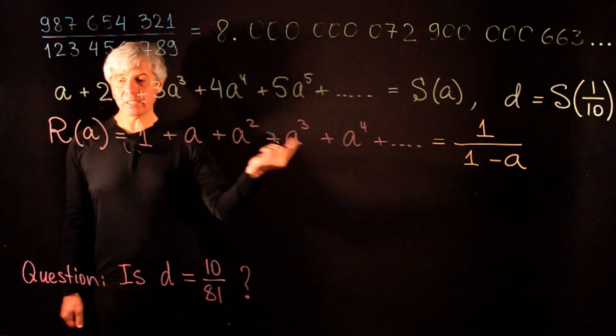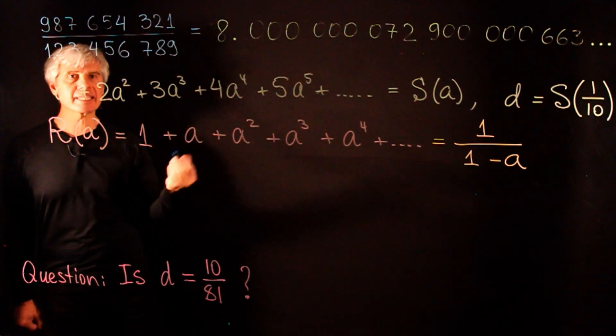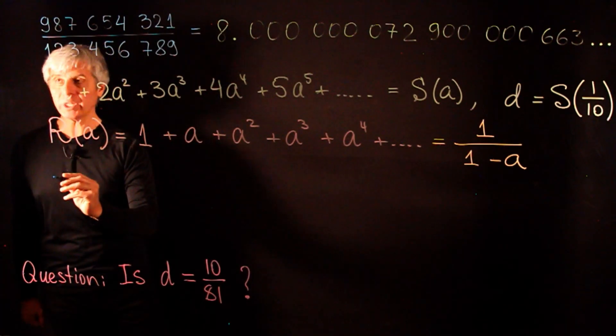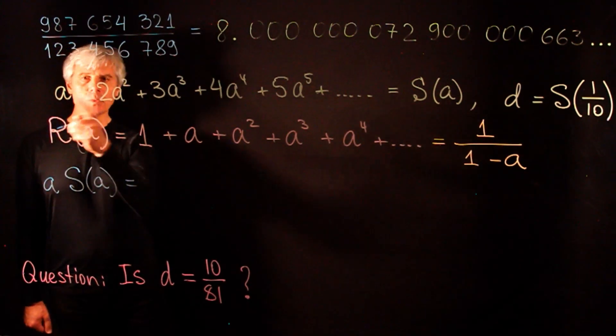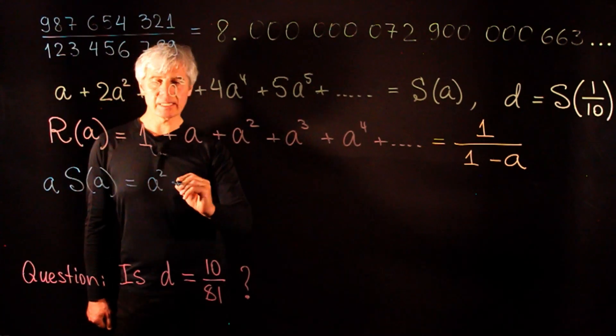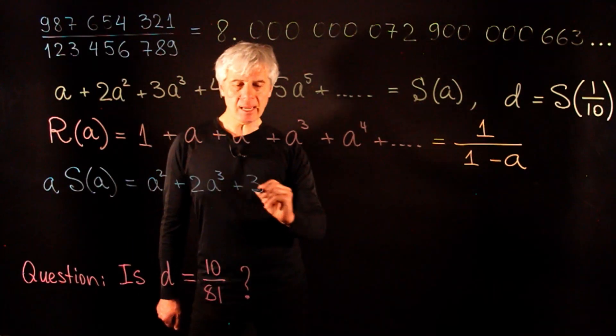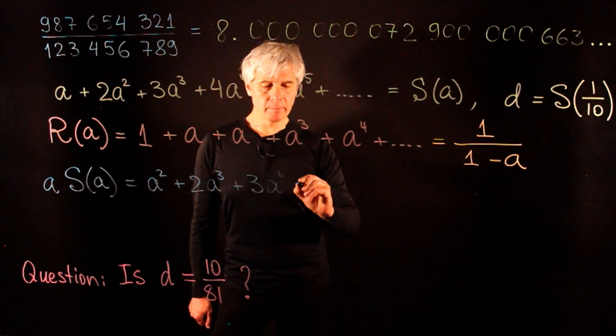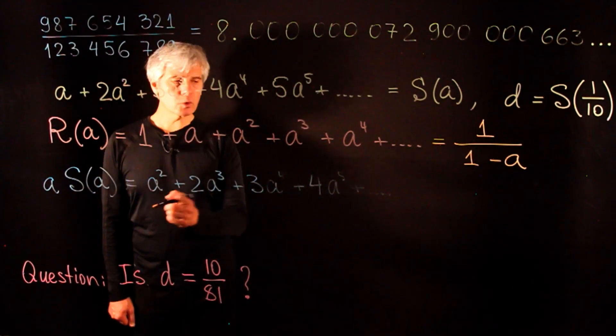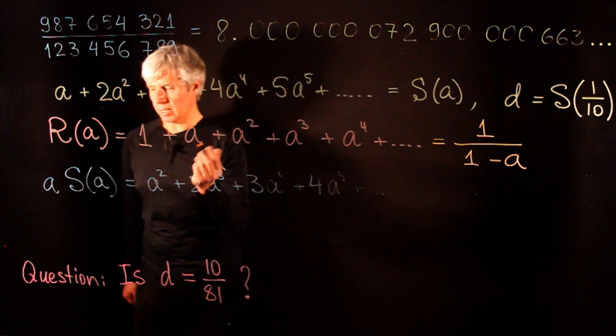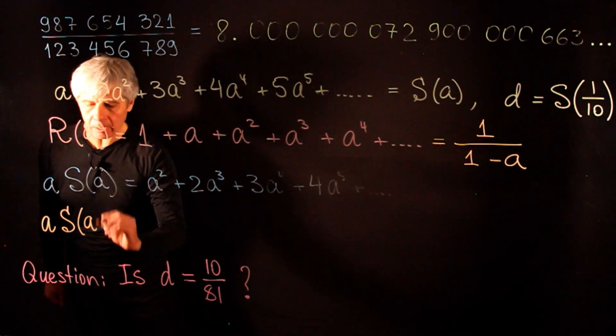This is great, but this is not what we need because we need to compute s and not r. But perhaps the same trick will work. So let's compute what is a times s of a. This will be a squared plus 2a cubed plus 3a to the power of 4 plus 4a to the power of 5 and so on. We need to somehow relate this expression to s of a. There is a way. So what if we add r to both sides?